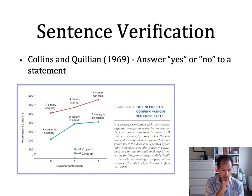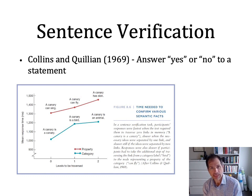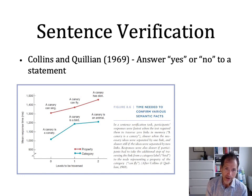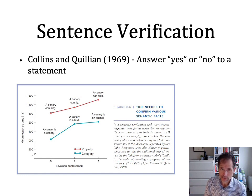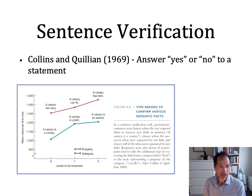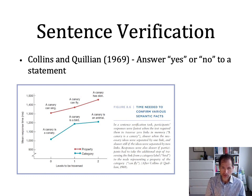What is shown on the graph, on the y-axis, is the response time in milliseconds. So 1,000 milliseconds is one second. When you're asked, a canary can sing, it takes you a little bit more than a second to answer yes as quickly as possible. When you're asked, a canary can fly, it takes you a little bit longer to say yes. And when you're asked, a canary has skin, it takes you a little bit longer still.